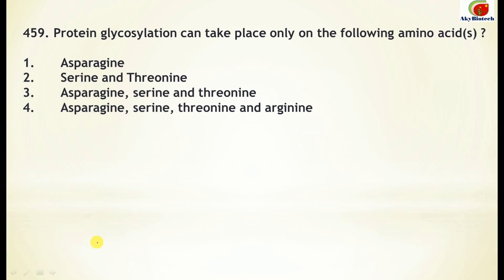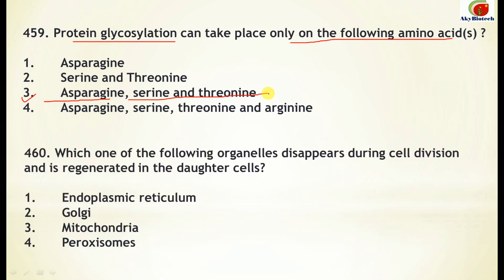Question 459: Protein glycosylation can take place only on which amino acids? The answer is asparagine, serine, and threonine. Question 460: Which organelle disappears during cell division and is regenerated in the daughter cells? The correct answer is the Golgi apparatus.